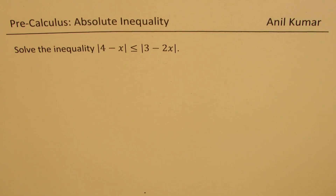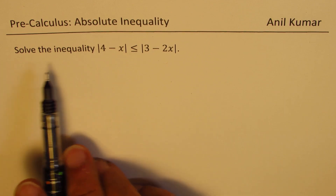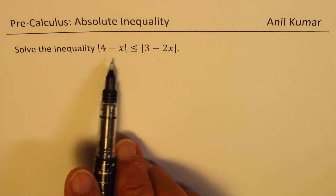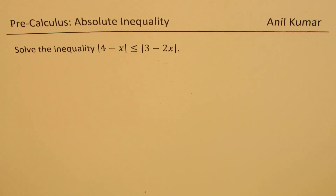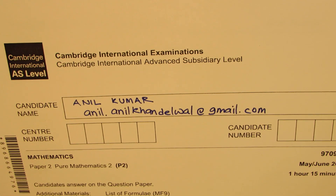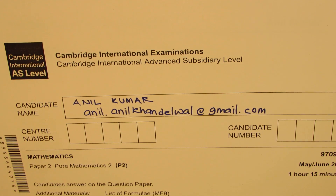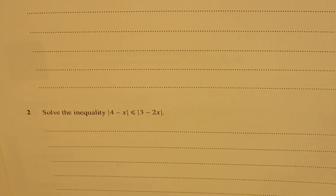I am Anil Kumar. Welcome to my series on solving inequalities. In this video we will learn techniques to solve an inequality which involves two absolute functions, as given in this question. We need to solve the inequality: absolute value of 4 minus x, less than or equal to absolute value of 3 minus 2x. You will see such questions in many test papers, including Cambridge International examinations — this question is taken from Cambridge International AS level.